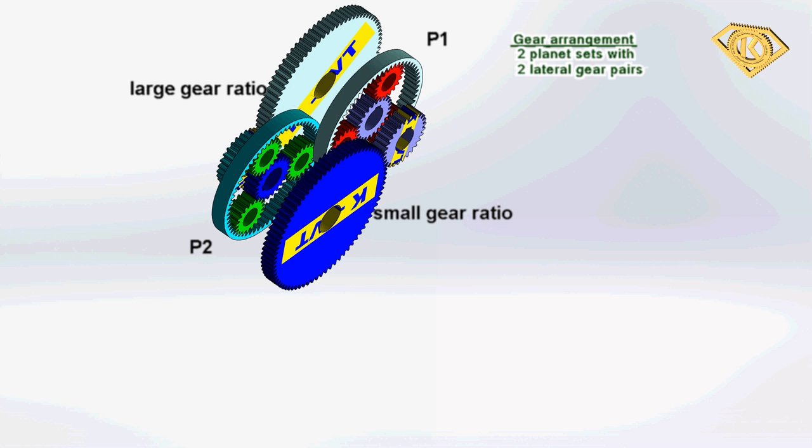This gear arrangement has such freedoms which allows at a constant motor input speed, simultaneously any rotation speed of the gear wheels which are located in the gear.